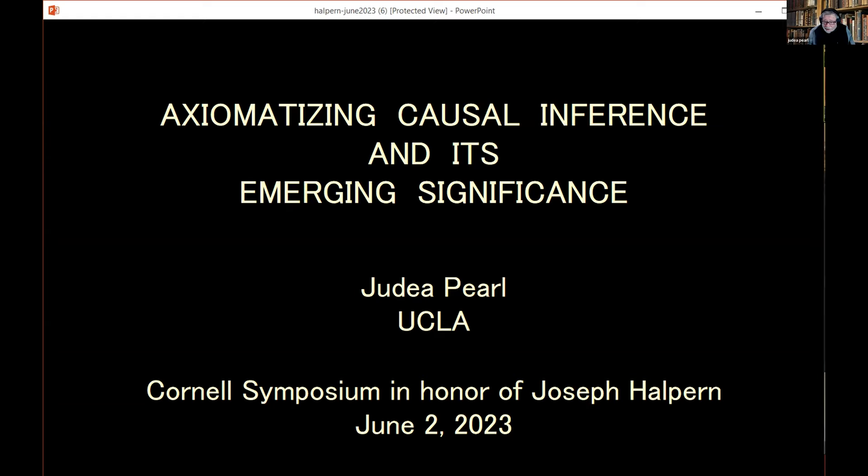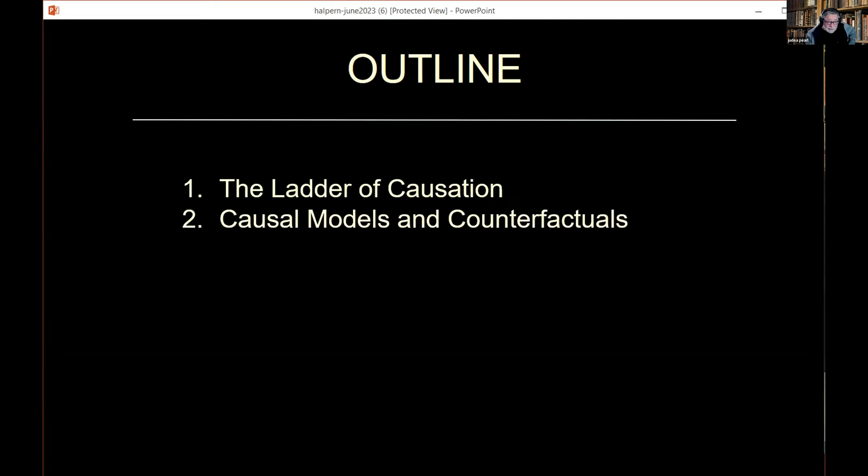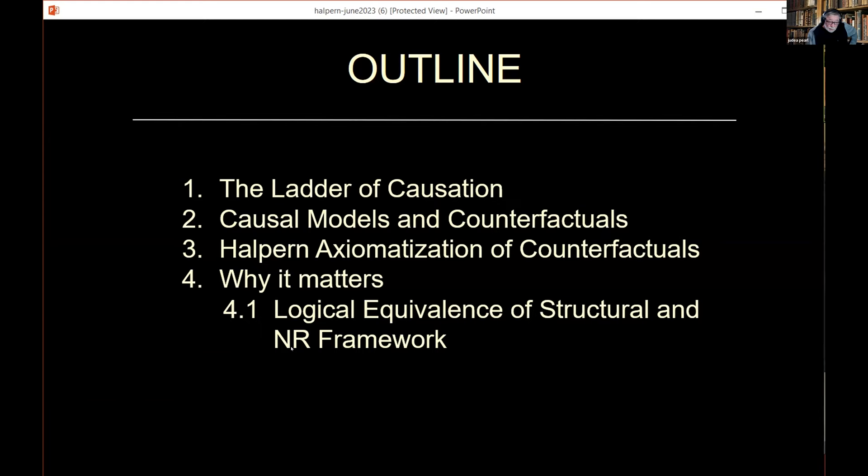My outline will simply be to give you some background on causal reasoning and ladder of causation, what we mean by causal models and counterfactuals, and then talk about the Halpern axiomization of counterfactuals and its significance. I'll show specifically the impact between two dialects of causal inference: the Neiman-Rubin framework and the structural framework that have been competing on the attention of researchers in this area.